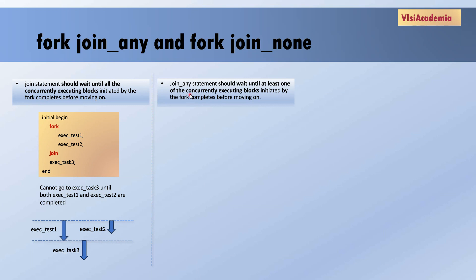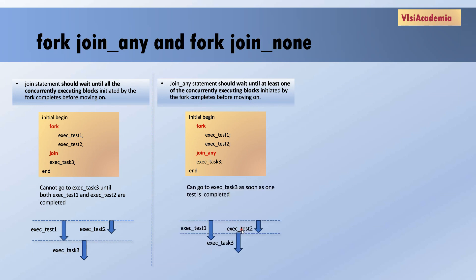Using join any, we can move to the next statement when at least one of the concurrently executed blocks initiated by the fork completes. Here is the same code but using join_any instead of join. As shown in the diagram, execute_test_two completes earlier, so the condition is met when at least one block finishes. Whenever one test completes, we move to execute_task_three. So when task two is completed, our third task starts executing.